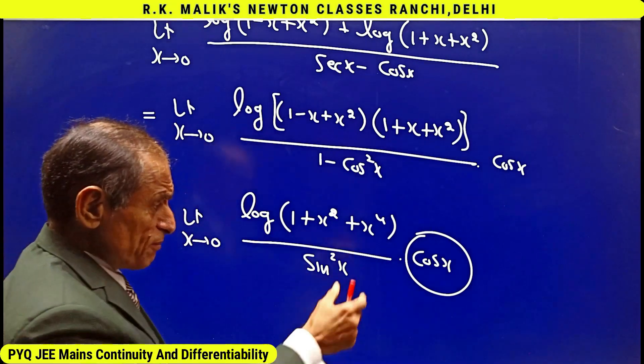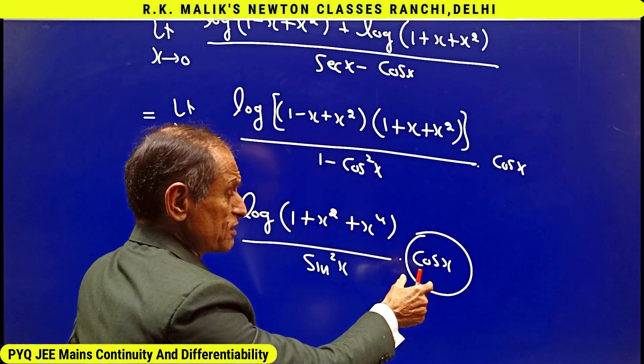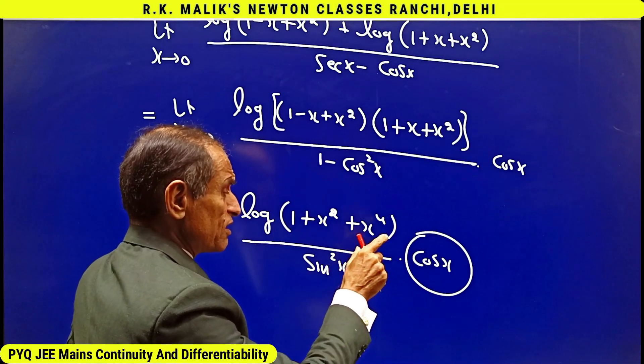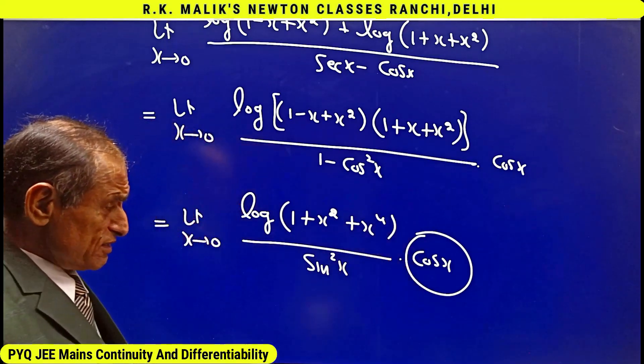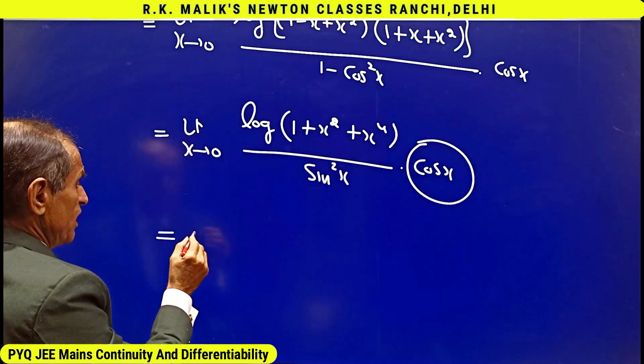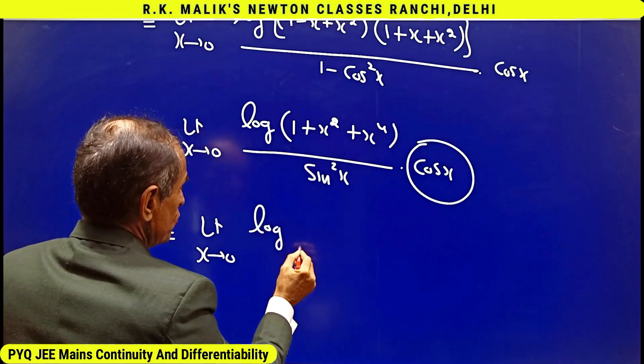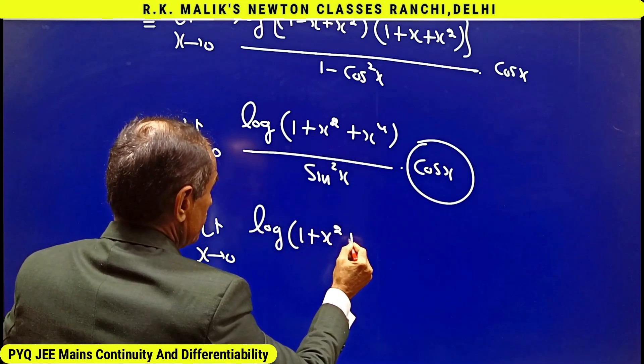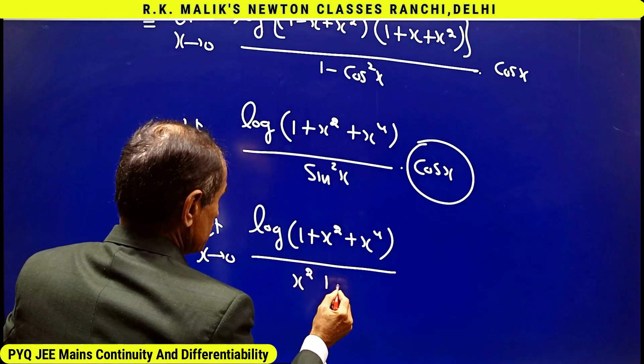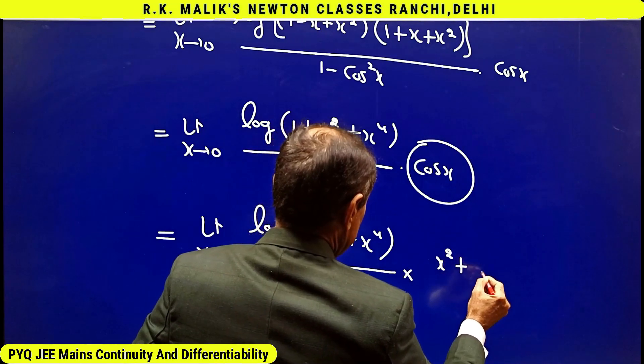if there is a part of the expression whose limit is non-zero finite and that part is in multiplication or division with the remaining whole part, then the limit of that part can be taken separately. Hence, I am allowed to take the limit of only this part, and I reach limit x tends to zero log of (1 + x² + x⁴) upon (x² + x⁴) times (x² + x⁴).